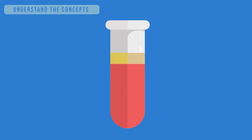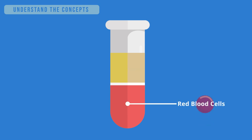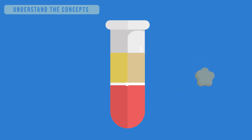The blood is made of 55% fluid and 45% cells. The fluid is called plasma. The main types of blood cells are red blood cells, white blood cells, and platelets. In dengue fever, the platelets are targeted by the virus.